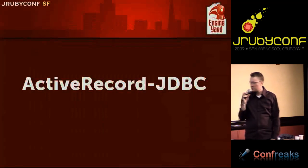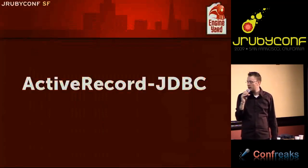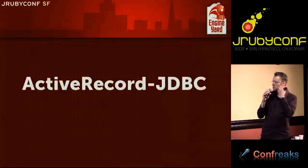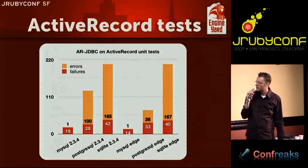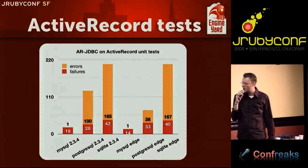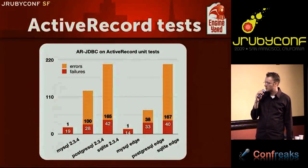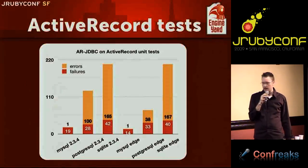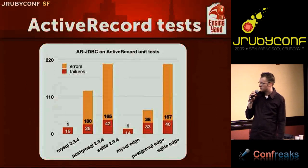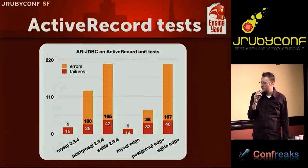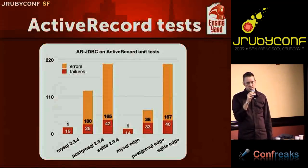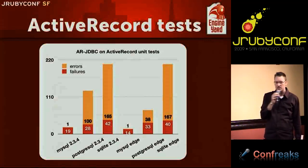Here's how ActiveRecord JDBC performs on the Rails unit tests. As Tom mentioned in the keynote, MySQL is pretty close but still not quite clean — about 15 to 20 errors depending on which version. Postgres and SQLite go up from there. Surprisingly, the existence of these errors is not enough to prevent you from actually running Rails — you saw that I ran SQLite with the scaffolding just fine. There will probably be some cases where they bite you, and if you find those we'd be happy to hear about them.